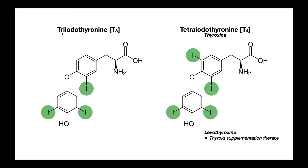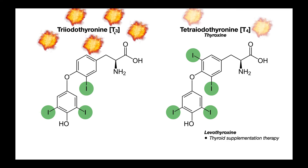To clarify the naming: triiodothyronine is T3 — named because it has three iodine atoms — and tetraiodothyronine is T4 — named because it has four iodine atoms. T4 also has another common name: thyroxine. When the thyroid gland makes these hormones, it makes a lot more T4 by quantity, so there's much more T4 than T3 in the blood. However, T3 has far more biological activity — both hormones influence heat production, metabolic rate, and tissue growth, but T3 is much more potent.